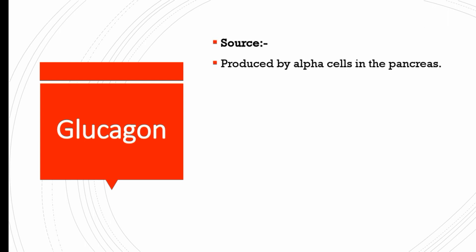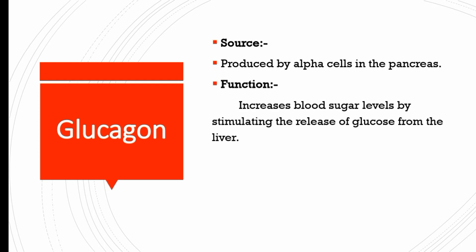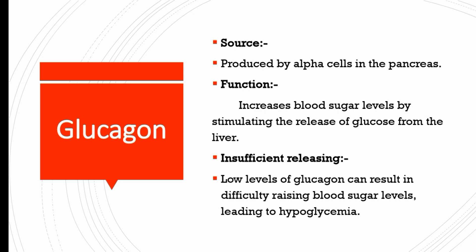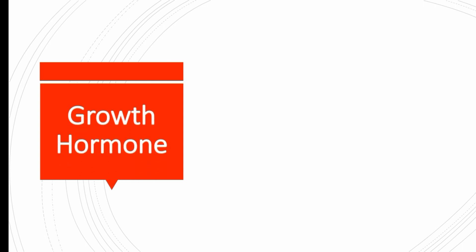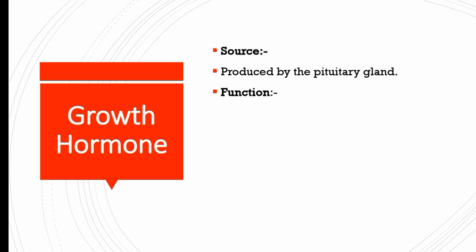Glucagon is produced by alpha cells in the pancreas. Its function is to increase blood sugar level by stimulating the release of glucose from the liver. Low levels of glucagon can result in difficulty raising blood sugar levels, leading to hypoglycemia.